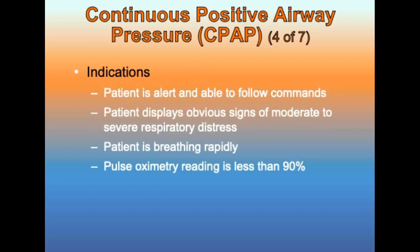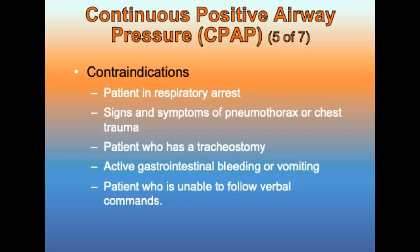Indications for CPAP: the patient must be alert and able to follow commands, displaying obvious signs of moderate to severe respiratory distress from conditions such as pulmonary edema or COPD, breathing rapidly with a rate greater than 26 breaths per minute affecting overall minute volume, and having a pulse ox reading less than 90%. Contraindications include respiratory arrest, signs and symptoms of pneumothorax or chest trauma, patient has a tracheostomy, active gastrointestinal bleeding or vomiting, and inability to follow verbal commands. Always reassess the patient for signs of deterioration or respiratory failure.